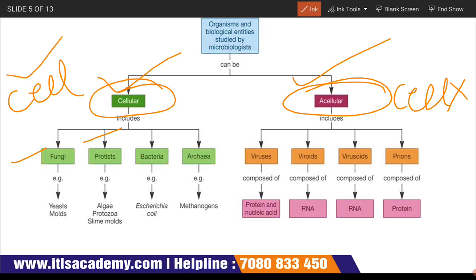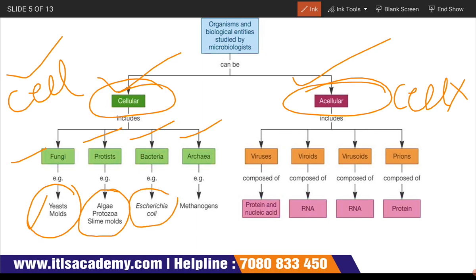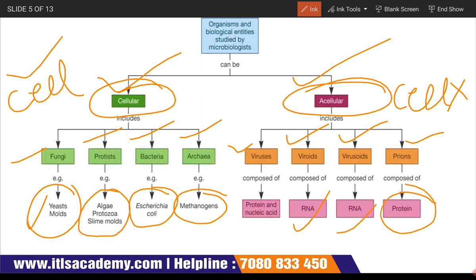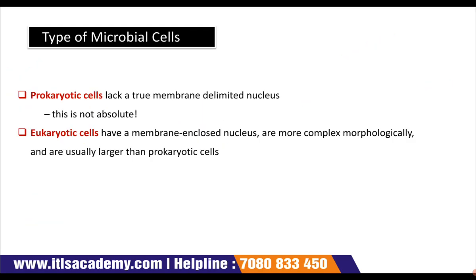Fungi include yeast and mold. Protists include algae, protozoa, and slime mold. Bacteria, for example E. coli. Archaea bacteria means methanogens. Then comes acellular, which includes viruses, viroids, and prions. Viruses are composed of proteins and nucleic acid; viroids are composed of RNA; virus-sites are composed of RNA; and prions are composed of protein. We will study these in detail.